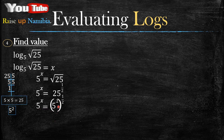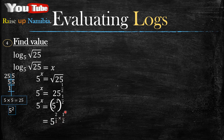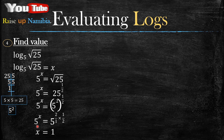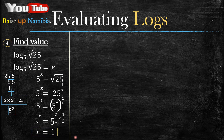We multiply 2 by 1 over 2 using the power law. To make it easy, write the 2 as a fraction: 2 over 1, then multiply by 1 over 2. The 5x comes down the same way. Our bases are both 5, so our exponents are equal: x equals 2 over 1 multiplied by 1 over 2, which is 1. That's your final answer.